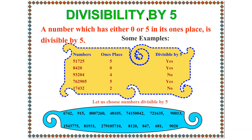Next is divisibility by 5. It is very easy to check whether a number is divisible by 5 or not. The rule is: a number which has either 0 or 5 in its 1s place is divisible by 5. So we only need to check the 1s place.